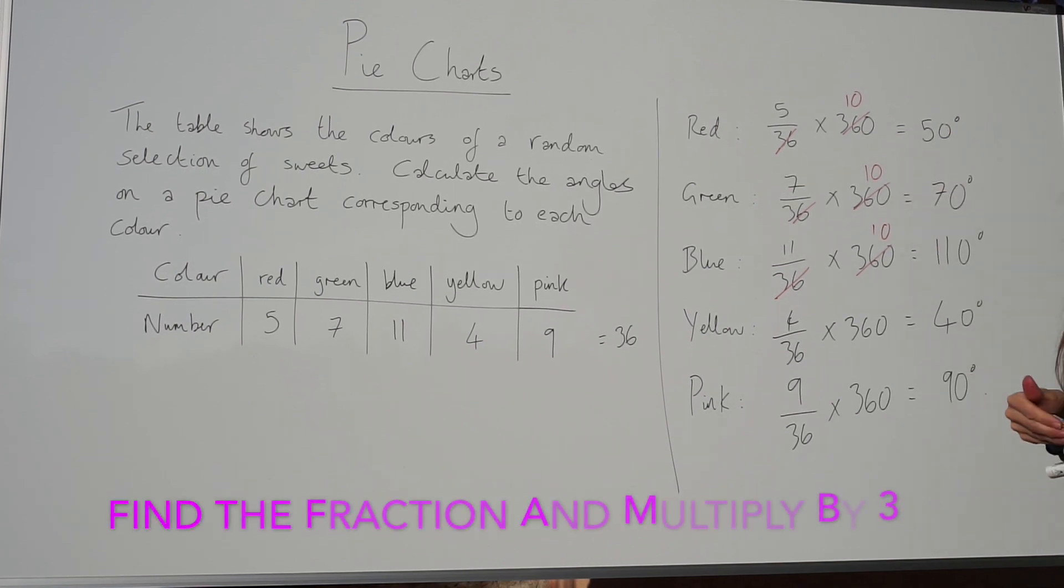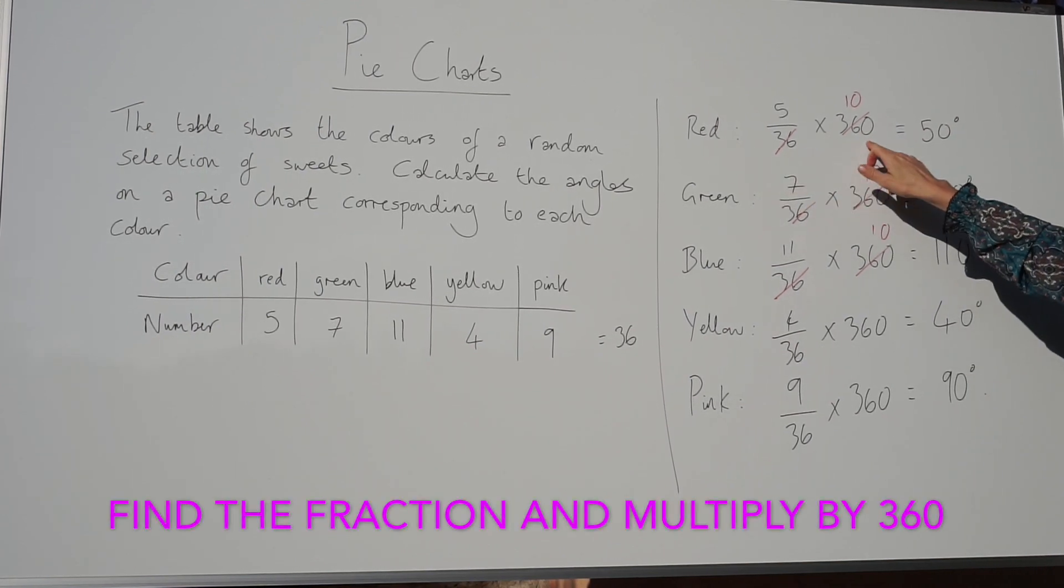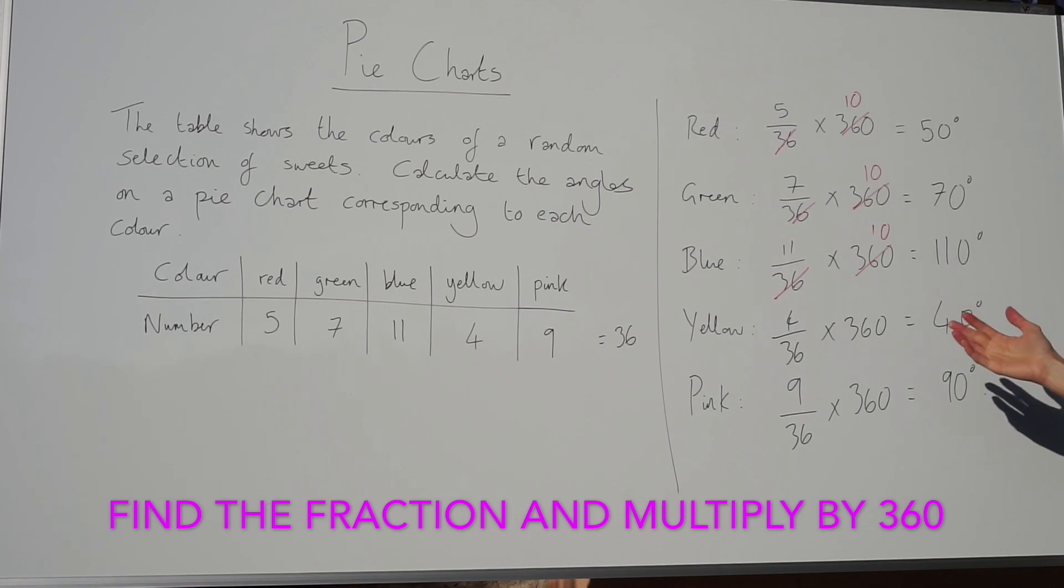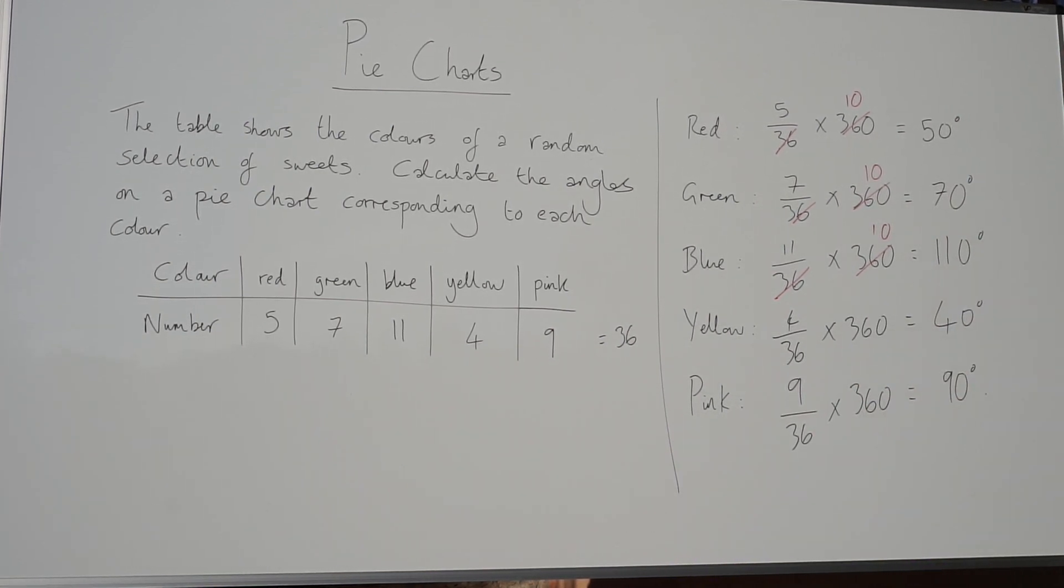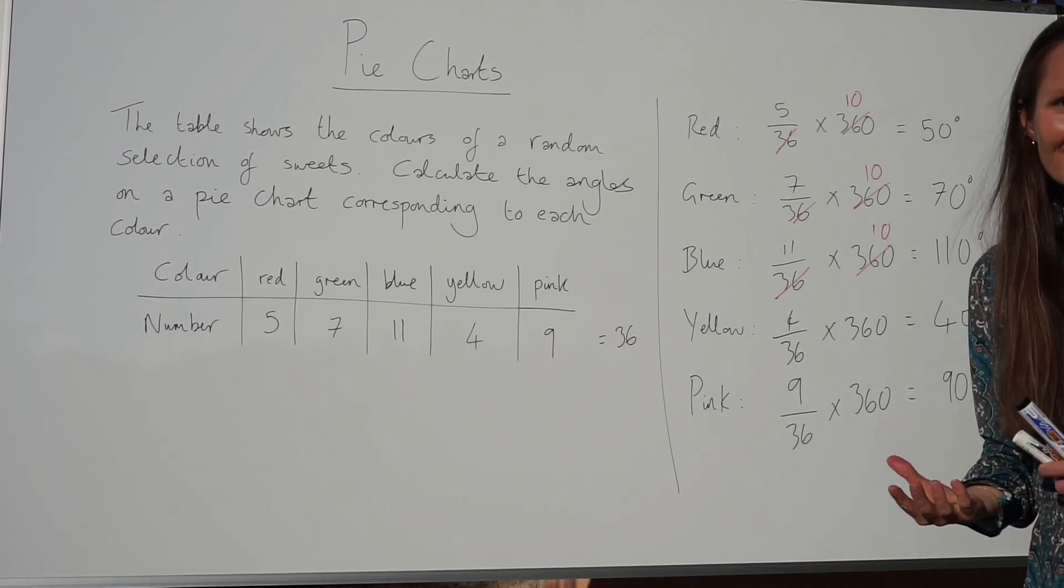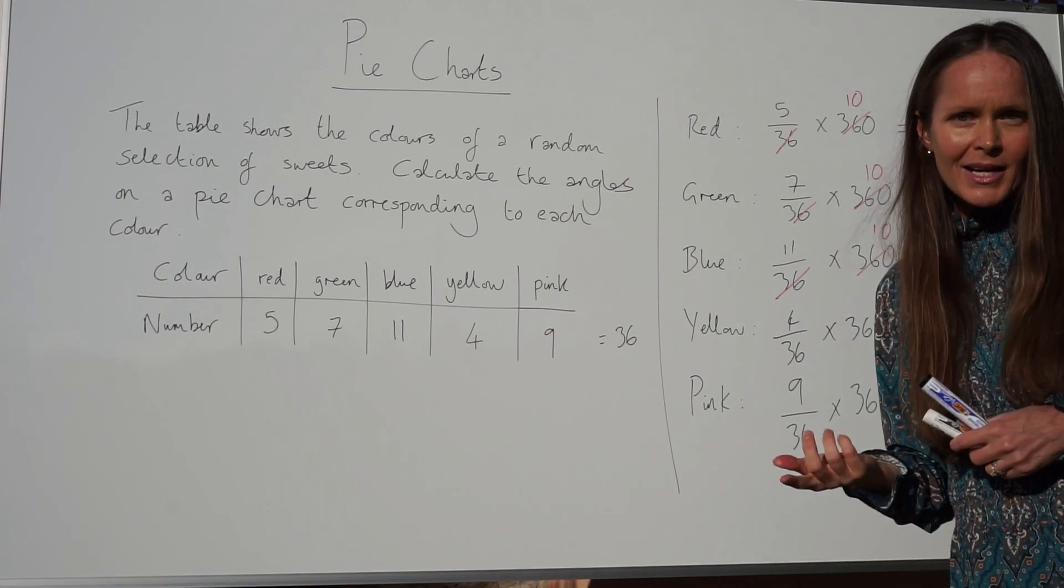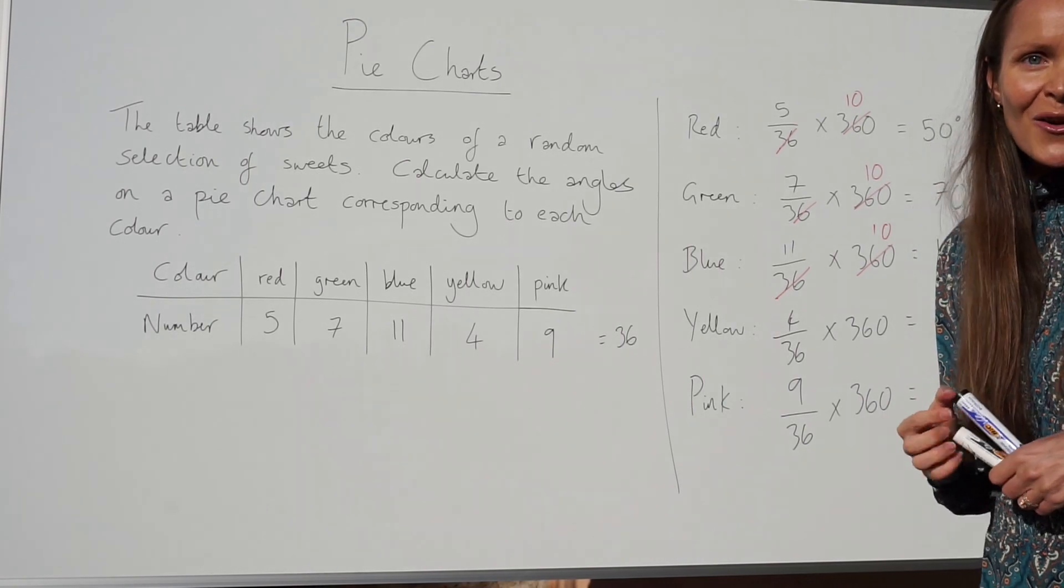So it's very straightforward: you find the fraction and you multiply that fraction by 360 every time to find the number of degrees. Just a good check you can do at the end of the question: add these up at the end. Hopefully they equal 360. If they don't, you know you've made a mistake, so you should just go back and check your answers.